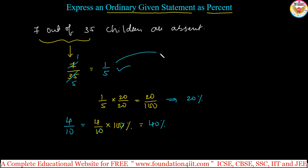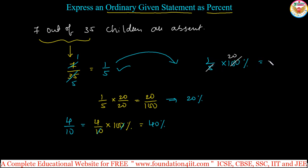Even for the previous example — 1 by 5 — just multiply with 100 and keep the percentage symbol. 100 divided by 5 is 20, so the answer is 20 percent. This is the same result as before: making the denominator 100 gives 20 out of 100, which is 20 percent. So multiplying 1 by 5 with 100 gives 20 percent.